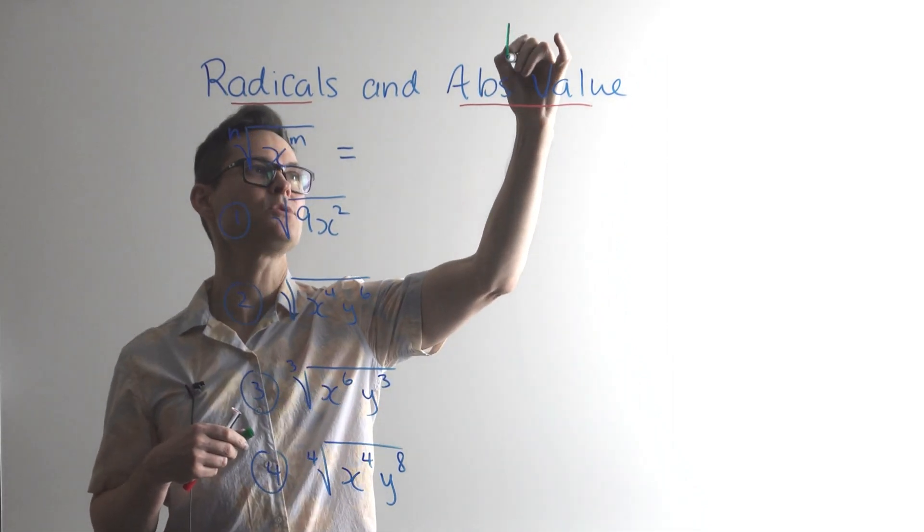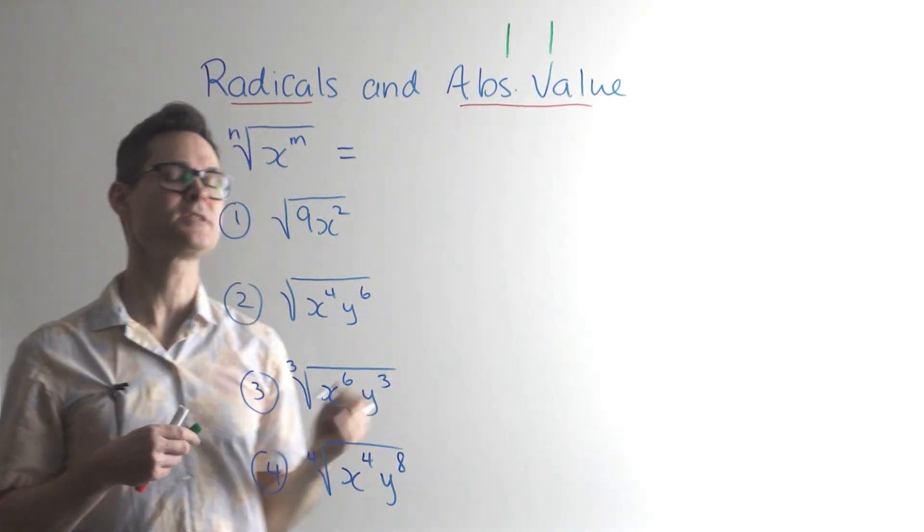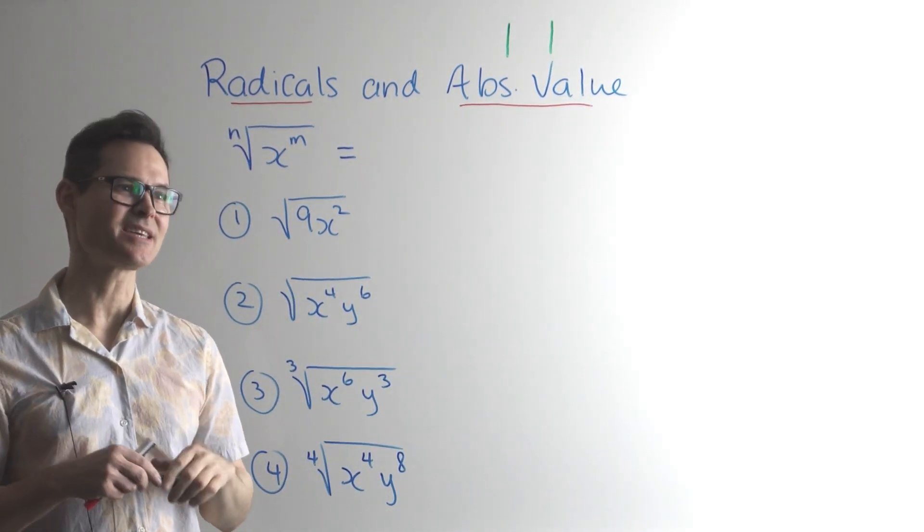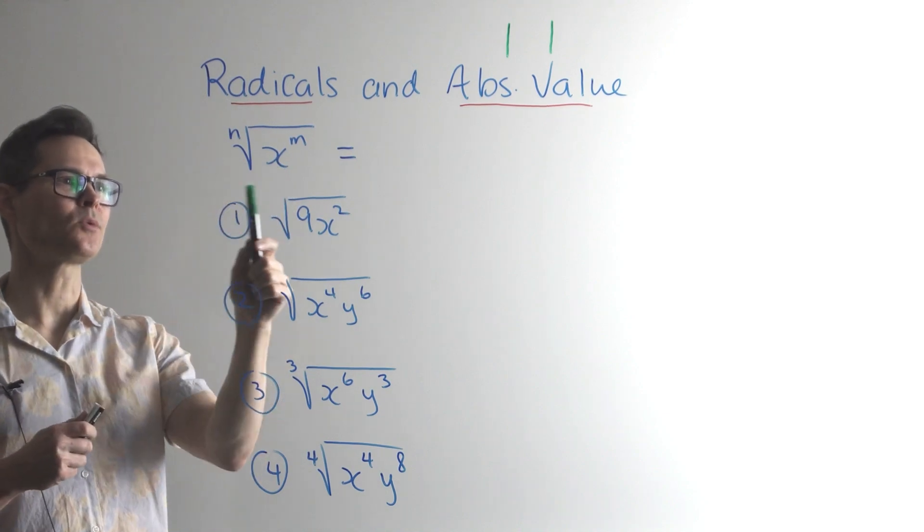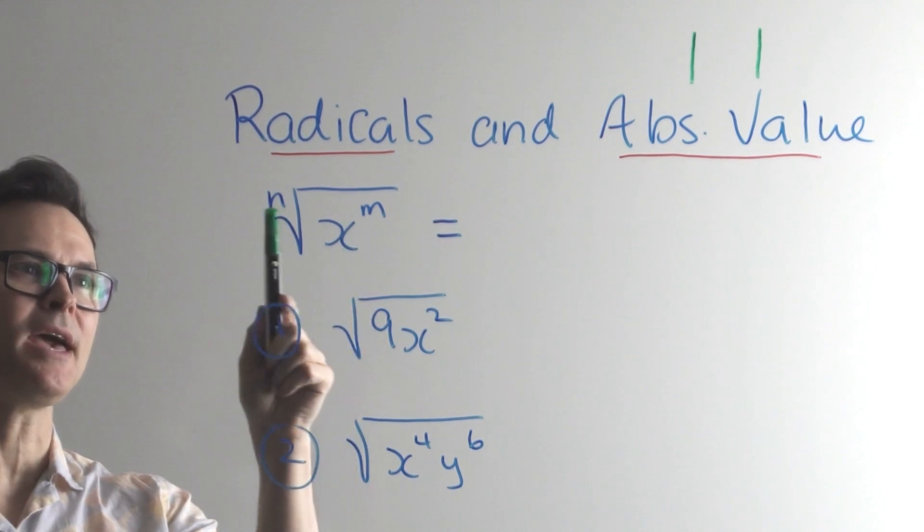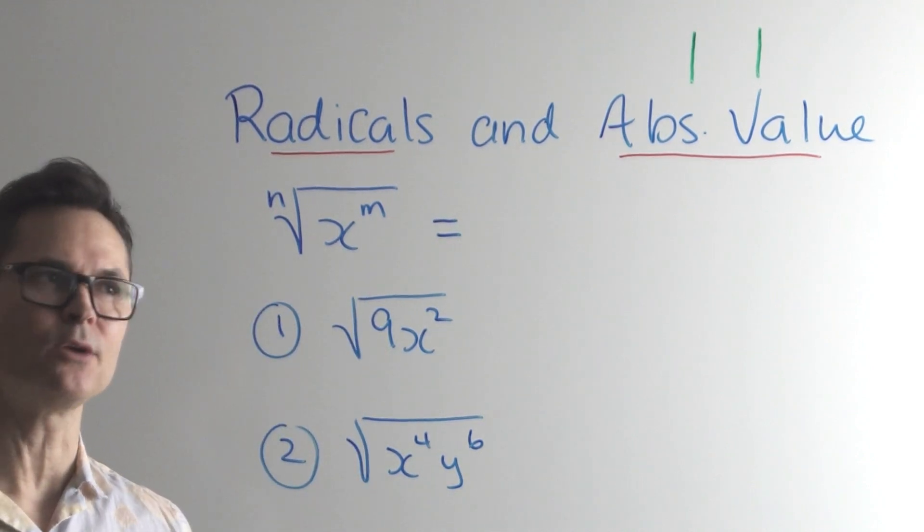Making sure that you know absolute value is a set of brackets—they're vertical bars. And we'll see what that means in a second. So radicals. Here is a radical. It looks ugly. It's got a power on the inside m and it's got an nth root on the outside.